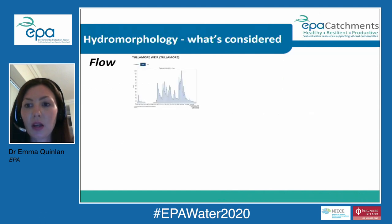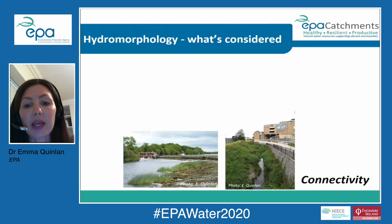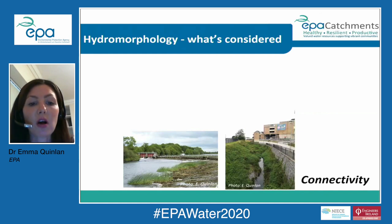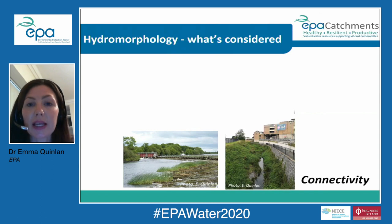When thinking about hydromorphology, we consider things like flow, longitudinal connectivity — that's the movement of water and sediment along the channel, but also fish migration — and lateral connectivity, which is the interaction of the channel with the river corridor or floodplain, and the channel's ability to move within its floodplain.